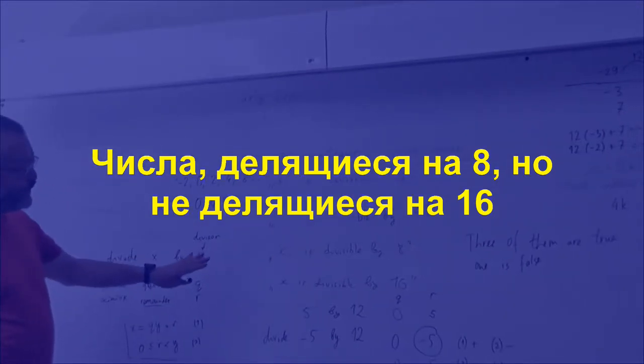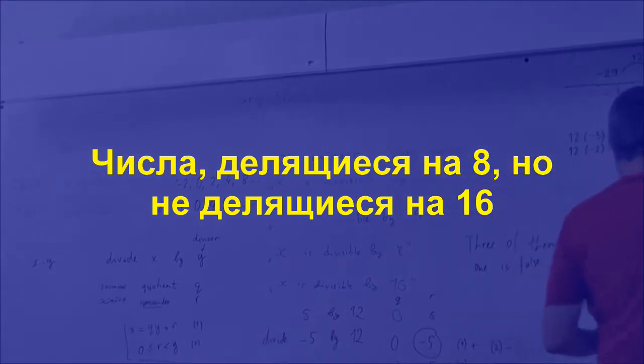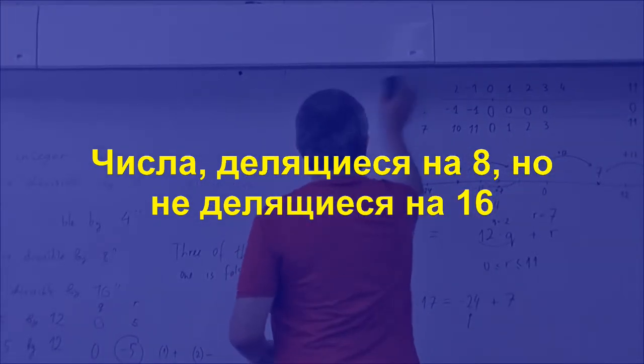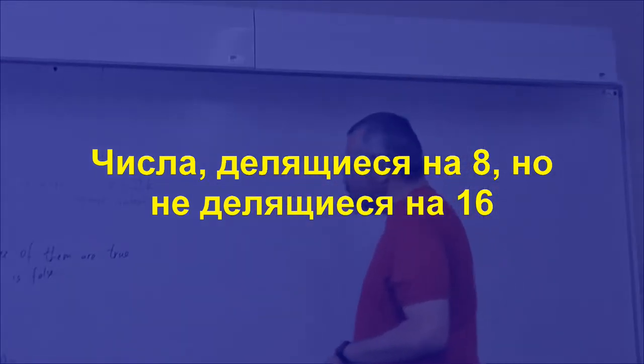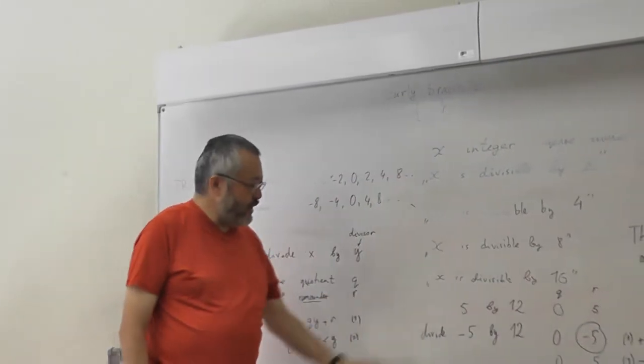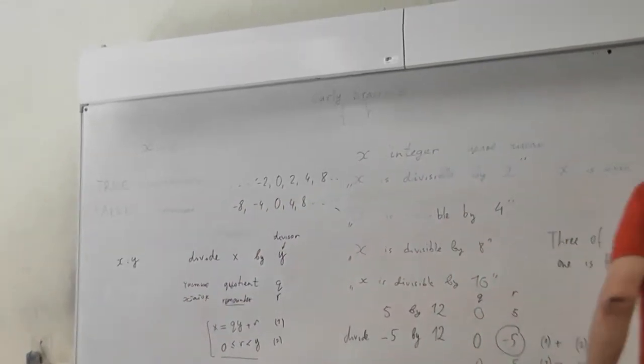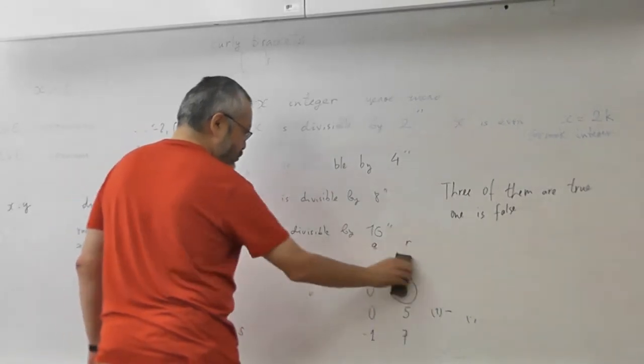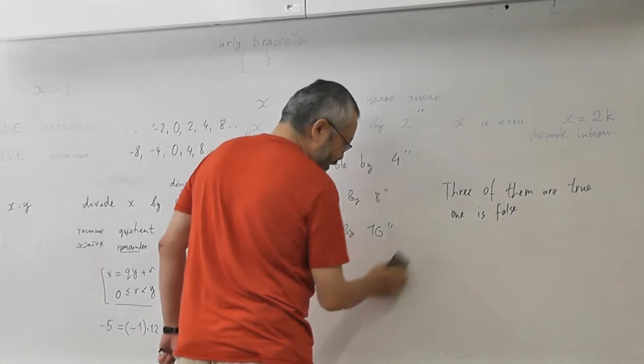So let's end our declarations. Let's return to our question about true and false statements. So here is x divisible by 2, x divisible by 4, x divisible by 8, and x divisible by 16. And we know that three of them are true and one is false. Let's move this to our official function.